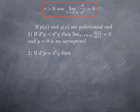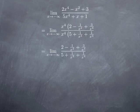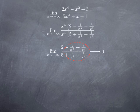What if the degree at the top and the bottom is the same? Let's look at an example: the limit as x approaches negative infinity of (2x⁴ - x² + 3) / (5x⁴ + x + 1). Both top and bottom have degree 4. Following the same procedure, we factor x⁴ at the top and at the bottom, and after canceling the common factor x⁴, we obtain (2 - 1/x² + 3/x⁴) / (5 + 1/x³ + 1/x⁴). All the extra terms go to 0, so the top approaches 2 and the bottom approaches 5, giving a limit of 2/5.